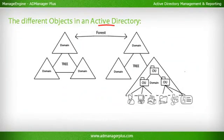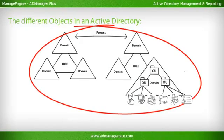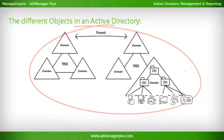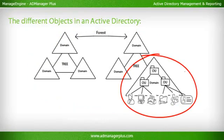Forest is the highest level of security boundary within an Active Directory and can contain one or more domains, domain trees, or a combination of domains and domain trees. Domain is the highest level of administrative boundary and can contain one or more organizational units, users, groups, computers, contacts, etc.